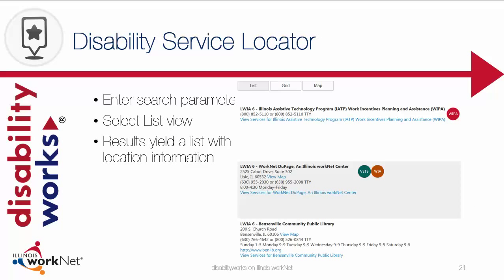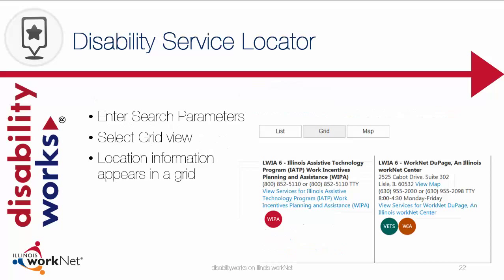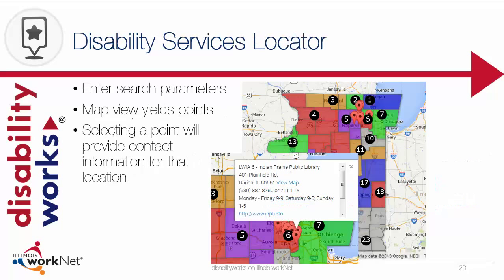Once you have entered your search parameters, you will select a way to view your results. By selecting the List view, the results will yield a list of the locations with the contact information. By selecting Grid view, your results will yield a grid with all of the locations and the contact information. By selecting Map view, the results will yield a pinpoint representation of the locations. When you select a point, a pop-up box will show with the contact information for that specific location.